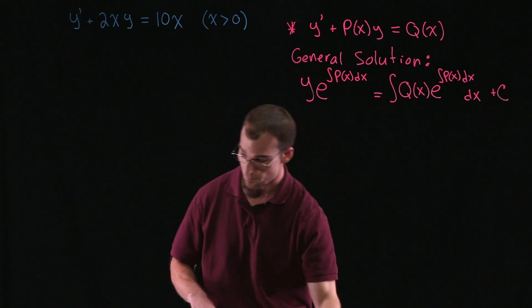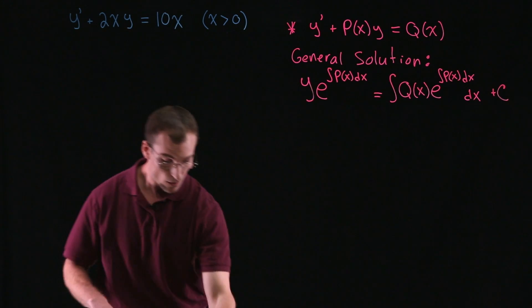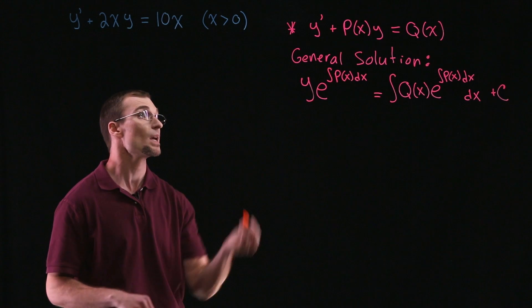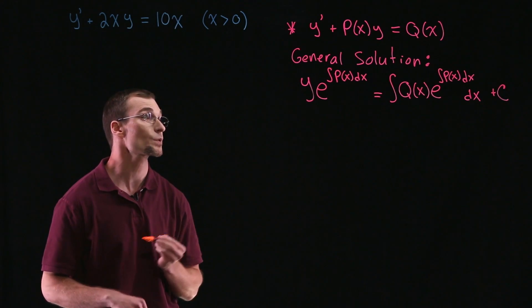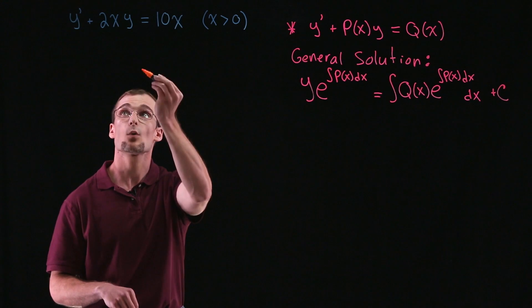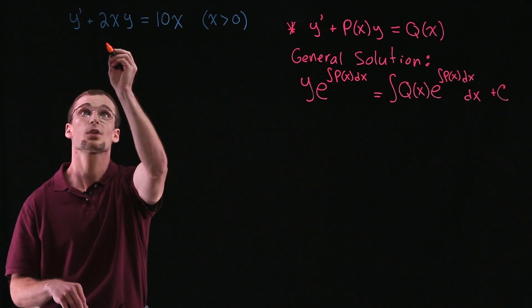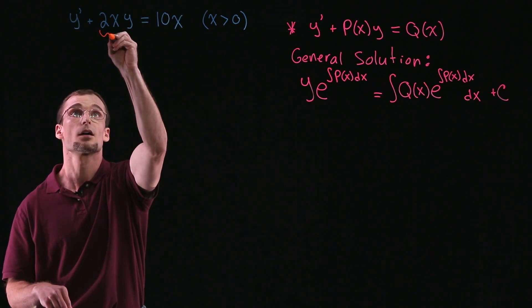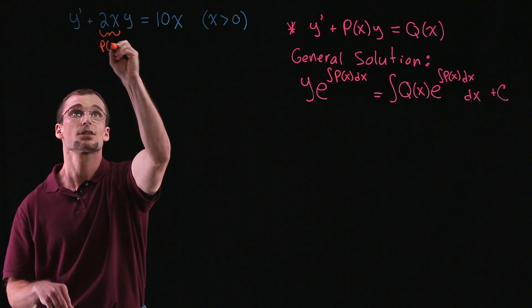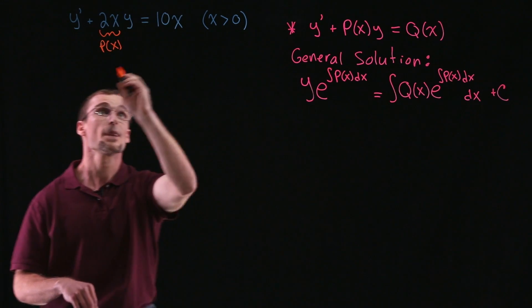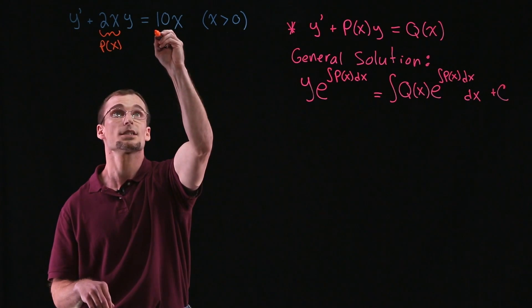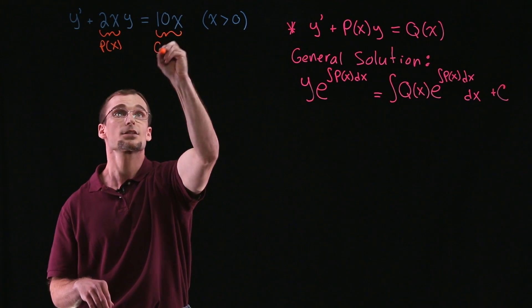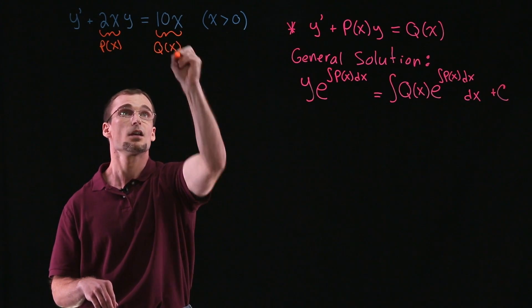So that's what we're going to start with. So coming over to our problem, first taking a look at the general form of a first order linear differential equation. And what we have here, we can see that y prime plus 2x times y, we see that our P(x) is equal to 2x. And on the right-hand side, this is equal to 10x, where that's going to be our function Q(x).